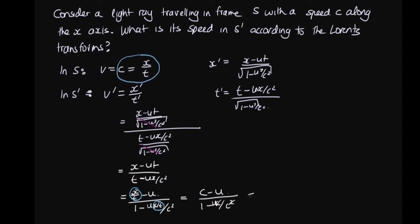One of the C's cancels, giving us (C minus U) over (1 minus U over C). Multiplying top and bottom by C over C — which equals 1 and doesn't change anything — we get C(C minus U) over (C minus U). We can then cancel out (C minus U) on the top and bottom, and we end up with C. This shows that the speed of light in frame S', V', is still equal to C, which is the postulate of Einstein's theory of special relativity.